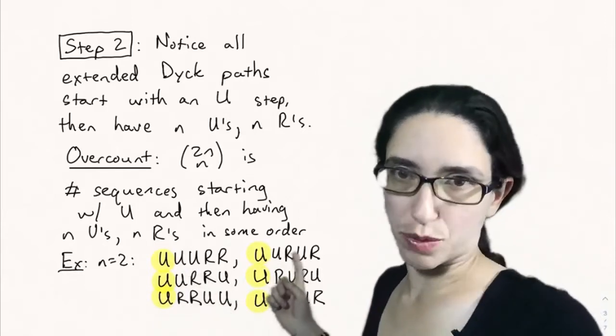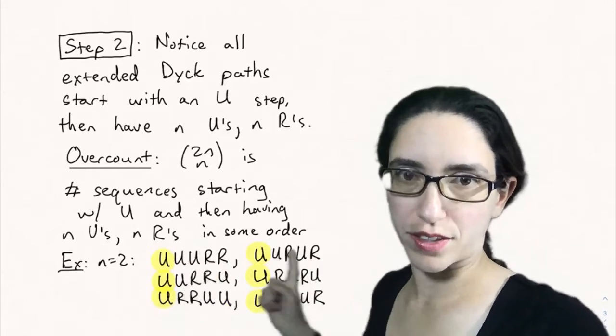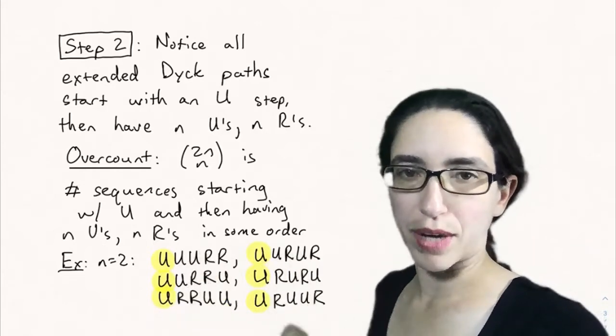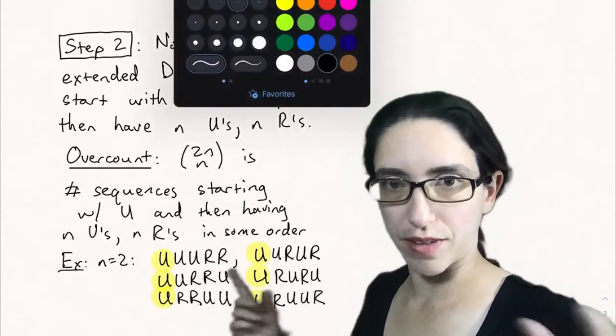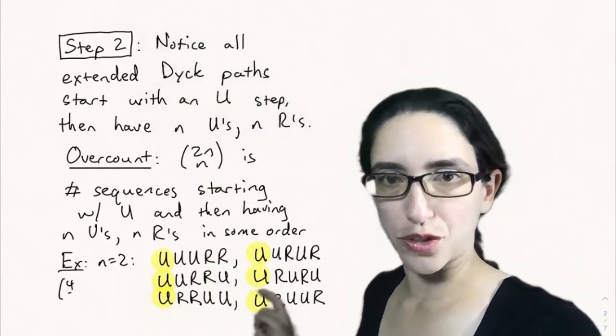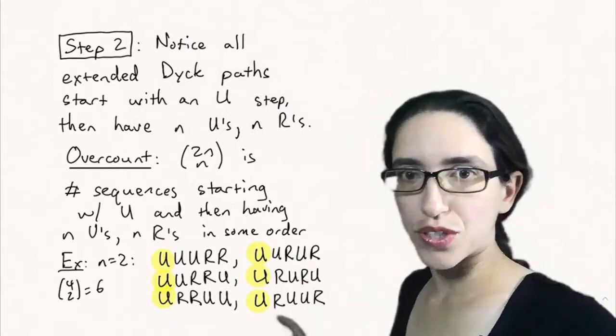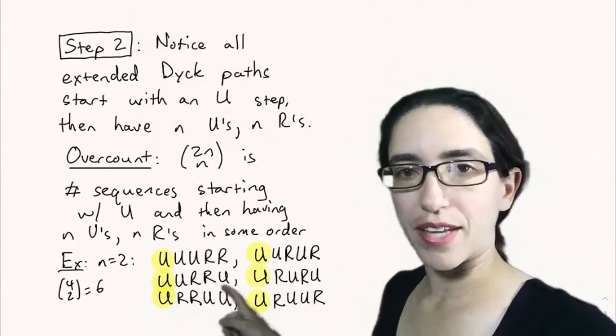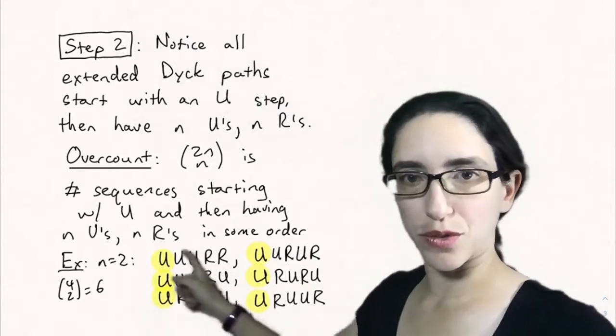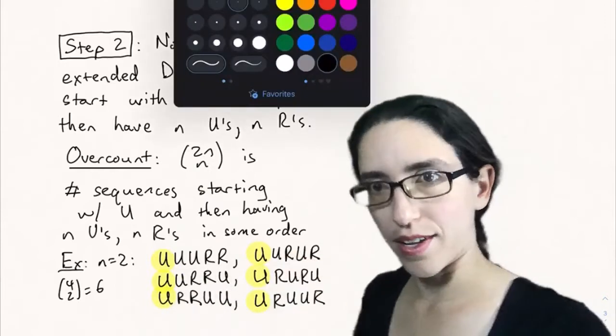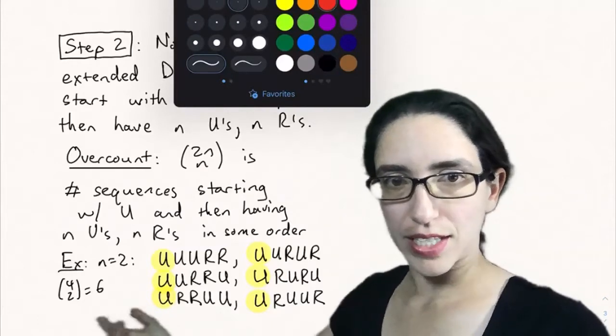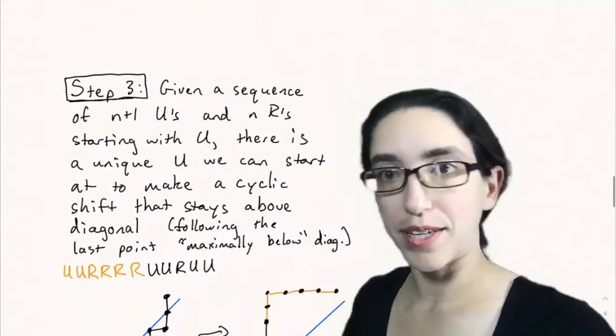But not all of these correspond to Dyck paths. We'll see that just the top two here correspond to Dyck paths. And in order to get the 1 over n plus 1 times 2n choose n, dividing by 3, we want to sort these into groups of 3. You see I have two columns of 3. The idea is we're going to make these groups so that each of these groups of 3 contains just one extended Dyck path. And that's how we'll take this 6 divided by 3 in the end.